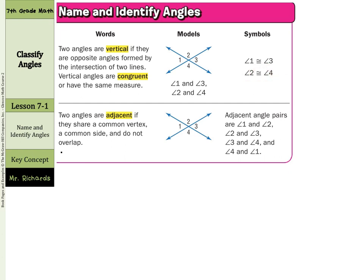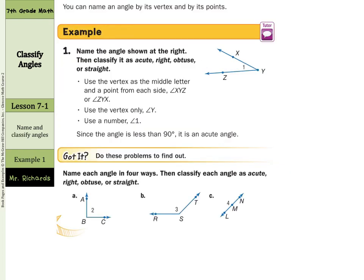Two angles are adjacent if they share a common vertex, a common side, and do not overlap. The adjacent angle pairs are one and two, two and three, three and four, and four and one. You can name an angle by its vertex and by its points.